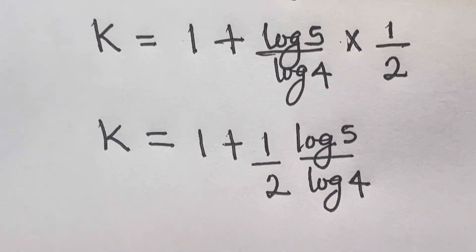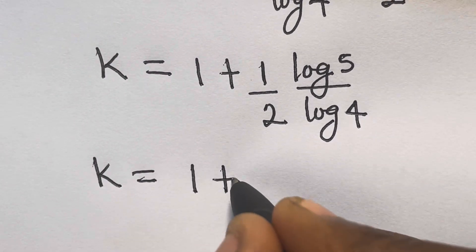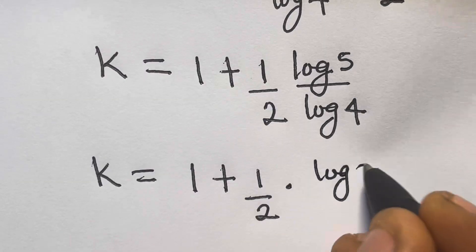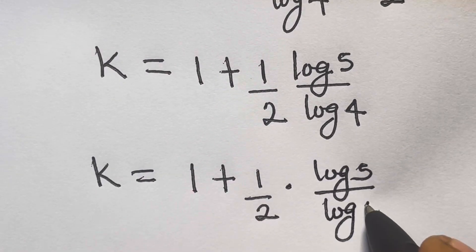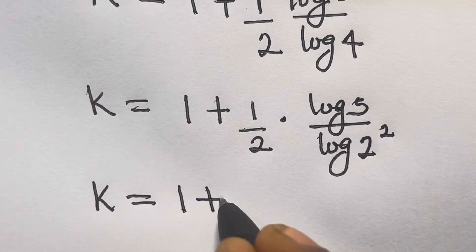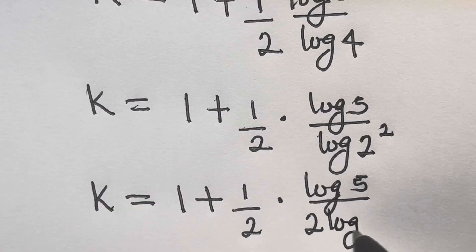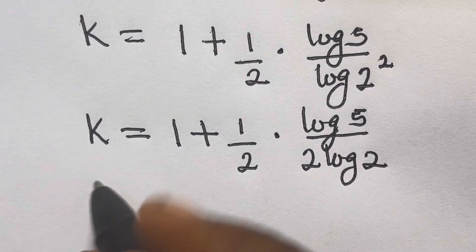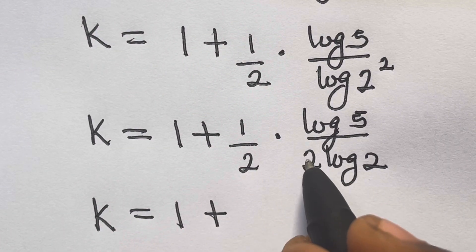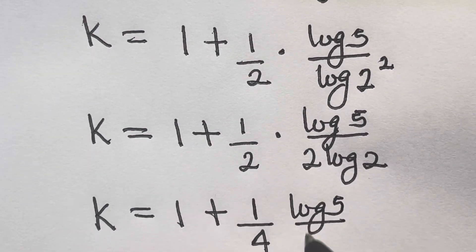So k equals 1 plus (1/2)·(log 5 / log 4). Now 4 can be expressed as 2², so log 4 equals 2·log 2. Therefore k equals 1 plus (1/2)·(log 5 / 2·log 2), which simplifies to k equals 1 plus log 5 / (4·log 2).